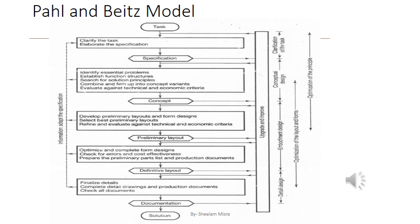The next model is the Pal and Pitts Model, which involves some basic steps. First is clarification of the task, which consists of collection of information and constraints on the design. Second is conceptual design, which involves establishment of the functions to be included in the design. Third is embodiment of design, where problems are resolved and weak aspects are eliminated. Fourth is detailed design, where the dimensions, tolerances, materials, and form of individual components of the design are specified for subsequent management.